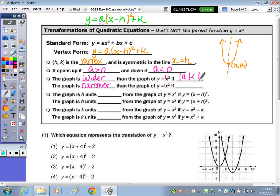If the value is less than 1, we have a wider parabola. And we're looking at the absolute value of a because the negative just tells us if it's upside down or right side up. So if the absolute value of a is less than 1, we're going to have a wider parabola, and it's going to be more narrow if the absolute value of a is greater than 1.